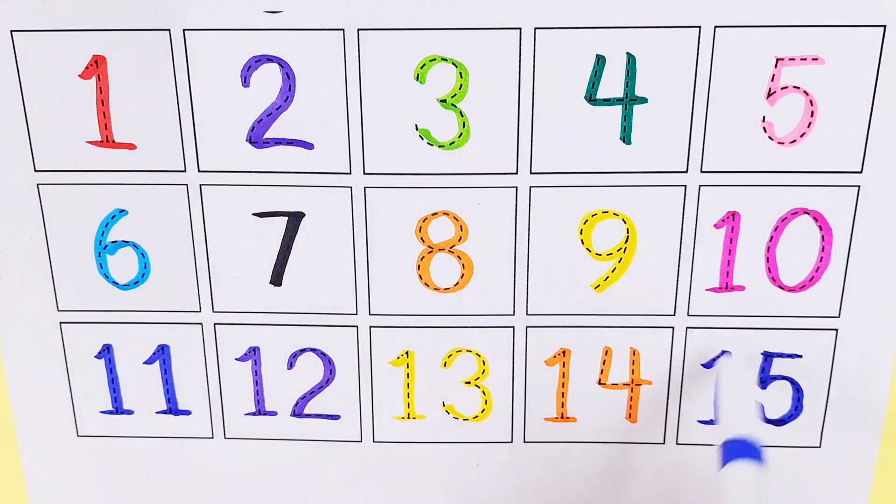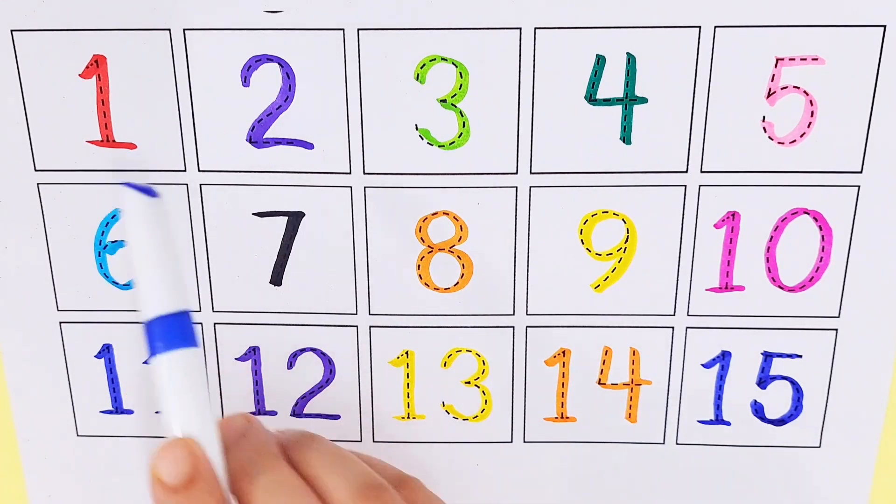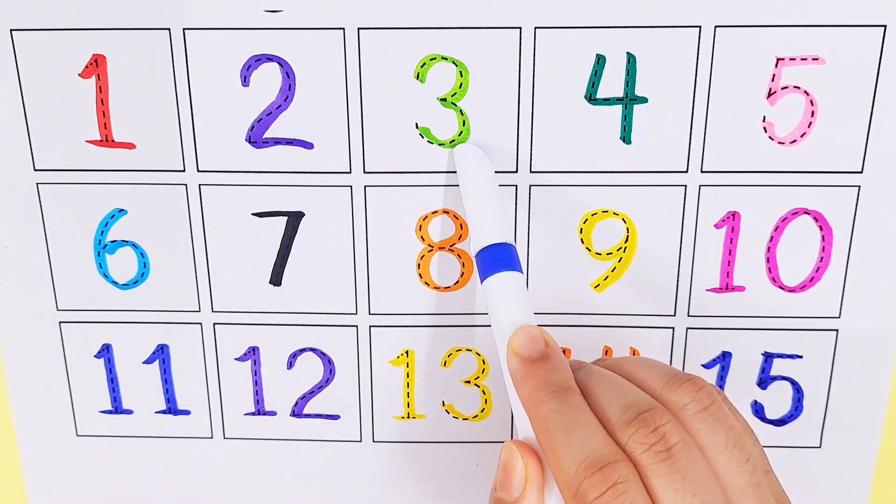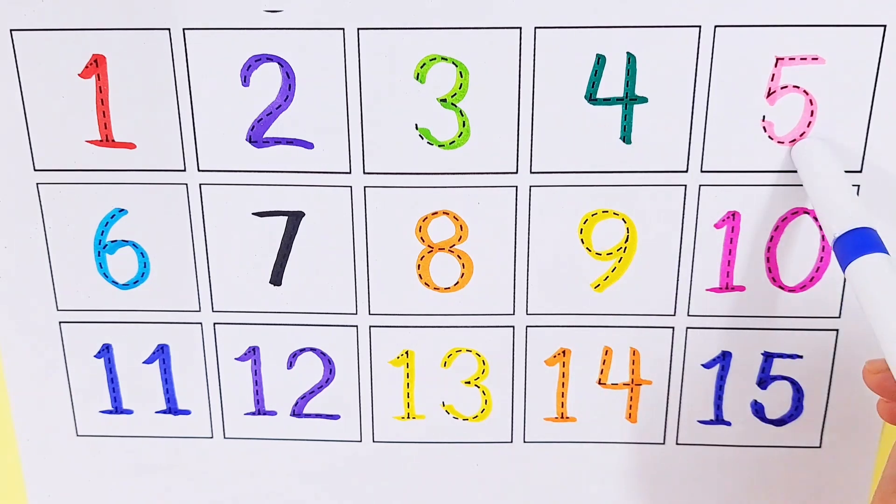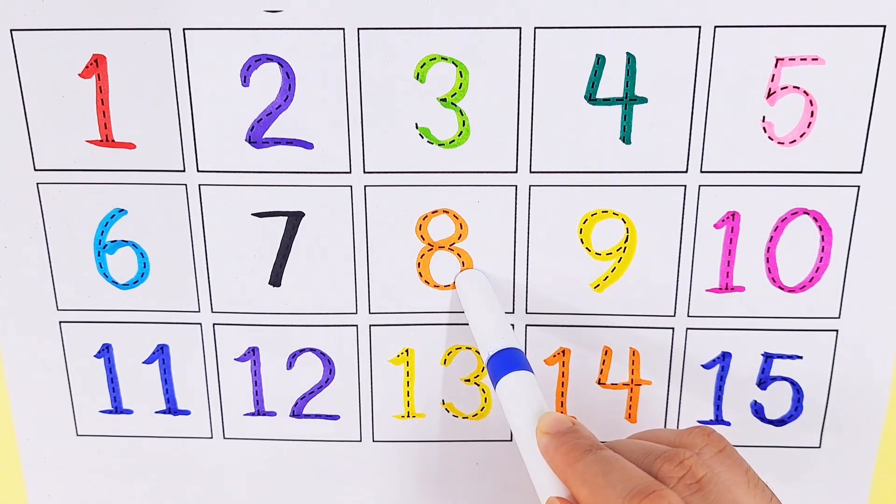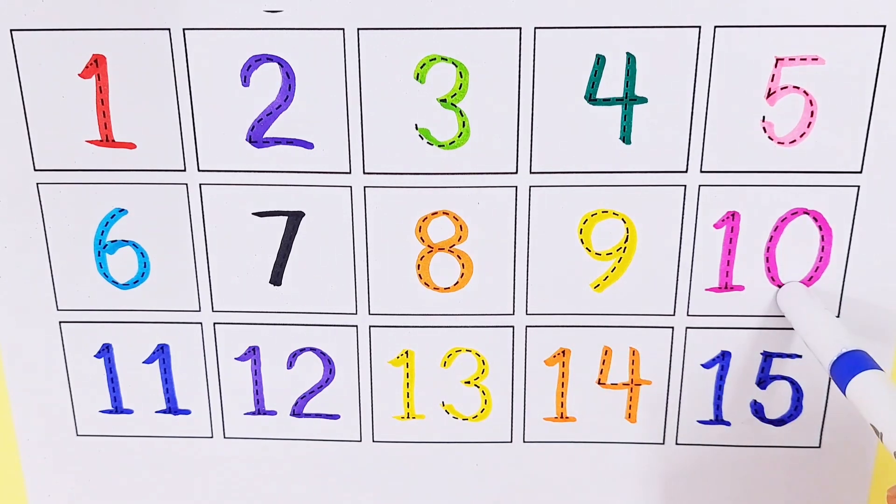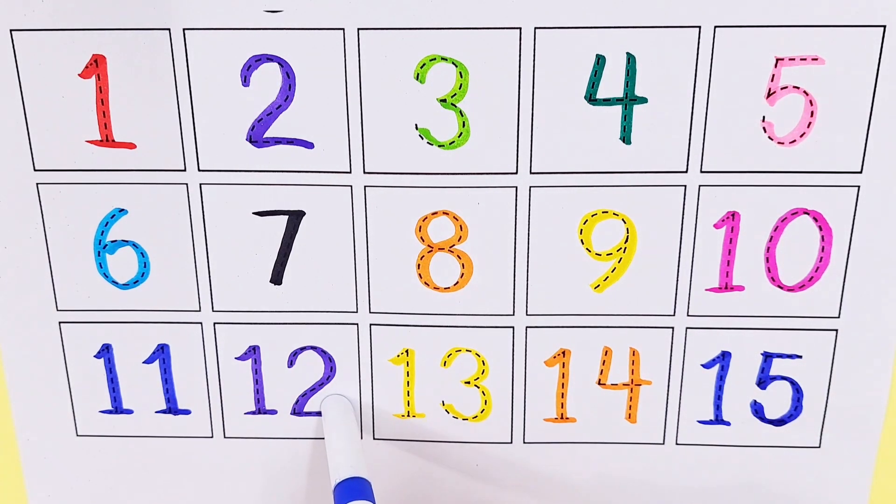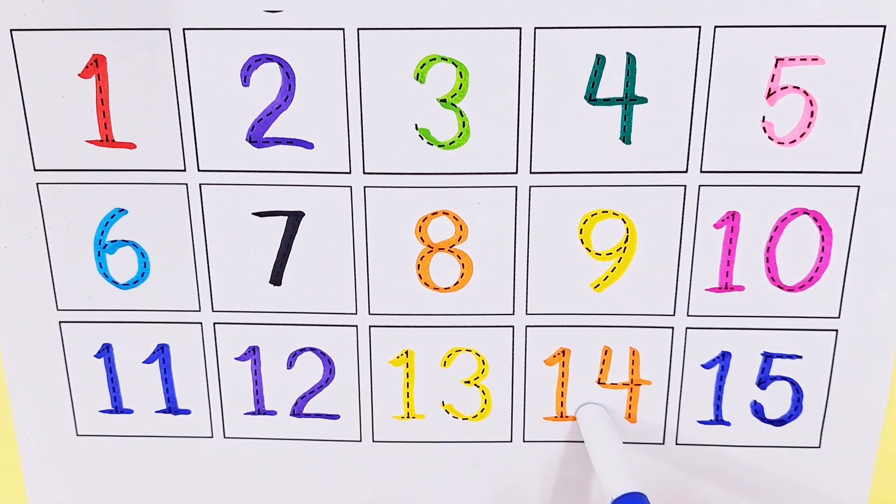Let's count the numbers again. Number one, number two, number three, number four, number five, number six, number seven, number eight, number nine, number ten, number eleven, number twelve, number thirteen, number fourteen, number fifteen. Thanks for watching. Don't forget to like and subscribe. See you in the next video.